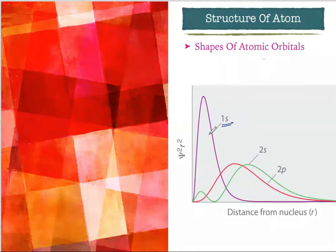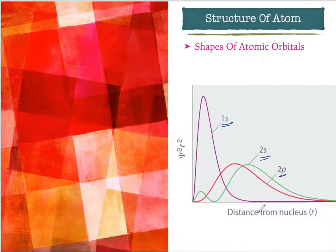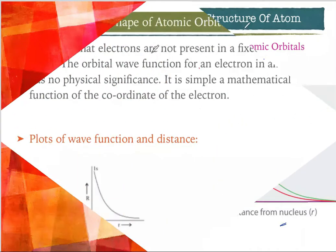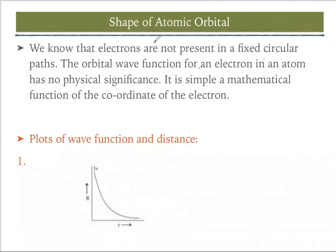Here you can see that the 1s graph is like this, the 2s graph is like this, and the 2p graph is like this. We will discuss how these graphs are generated and how we draw the different x and y axes. Let us start drawing the shapes of atomic orbitals.